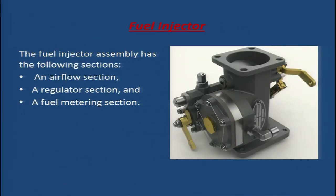The fuel injector assembly has three sections: an air flow section, a regulator section, and a fuel metering section. Looking at the figure, you can see the fuel injector with various levers — we will understand what these levers are. The top opening is the throttle body where air enters.